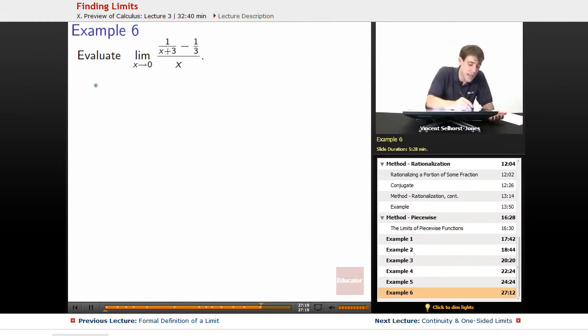First question we ask ourselves is, is it a normal function? Well, you can guess by my hint of no. If we plugged in 0, 1 over 3 minus 1 over 3, 0 on top, divided by 0 on bottom, no, definitely not normal.